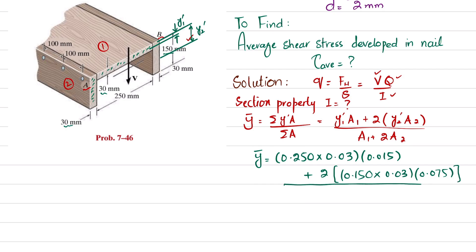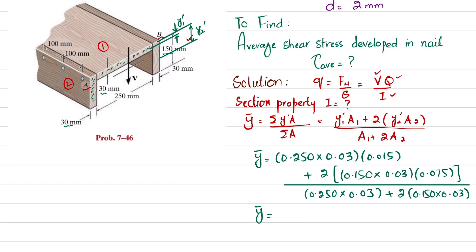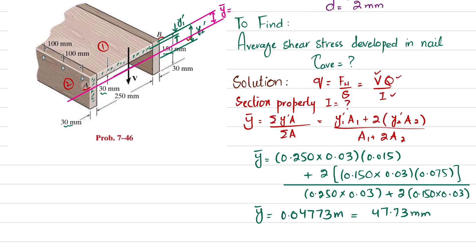Dividing by the total area — A1 is 0.250 times 0.03, plus 2 times A2 which is 0.150 times 0.03 — when you calculate you get y-bar, the location of the neutral axis passing through the centroid, equal to 0.04773 m, or 47.73 millimeters from the top surface.